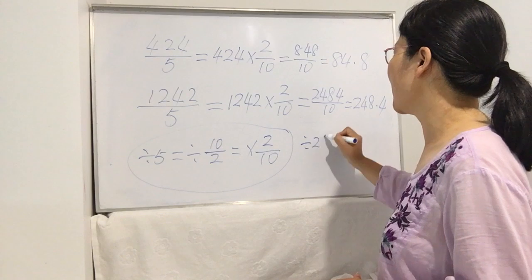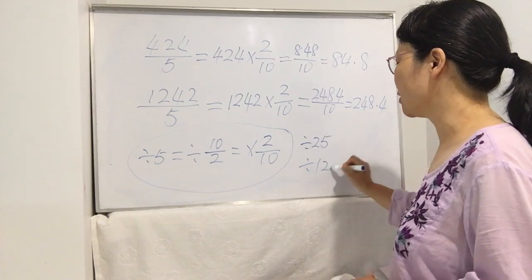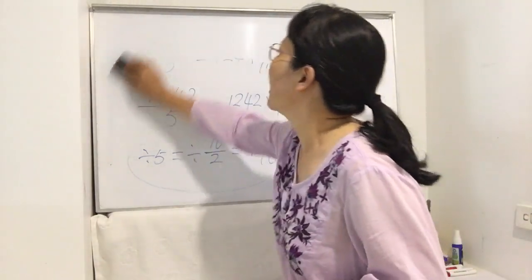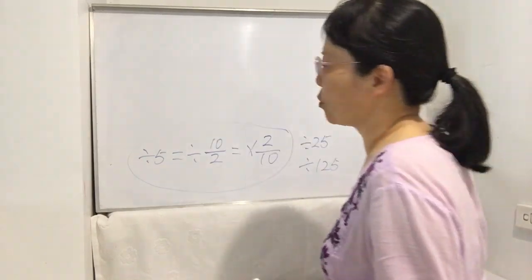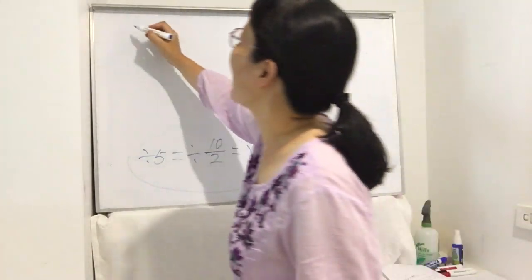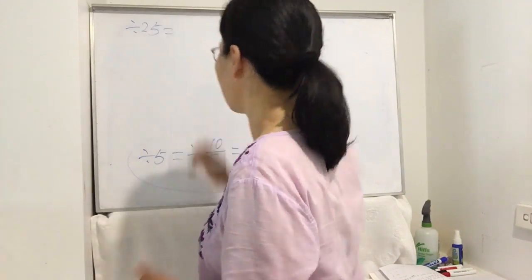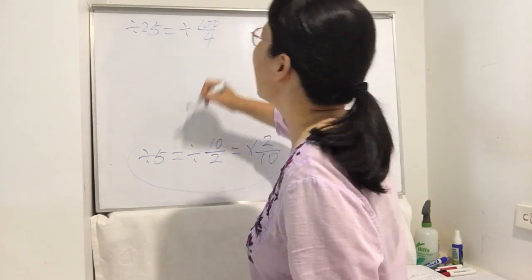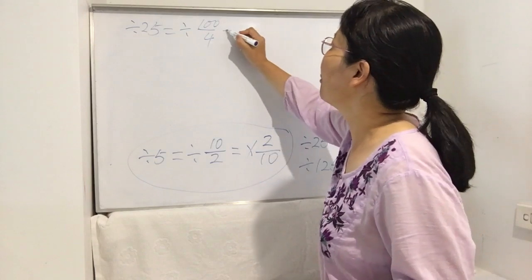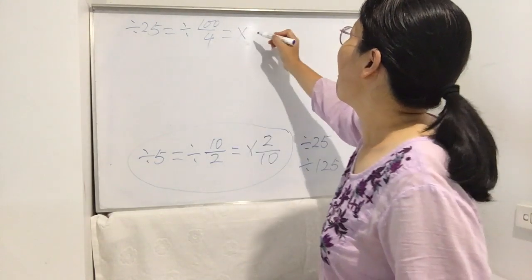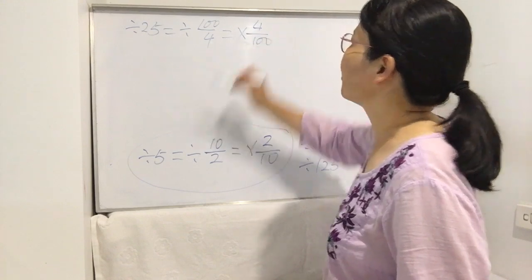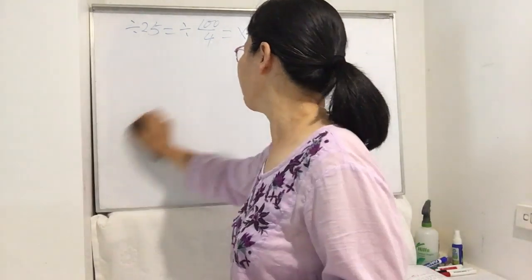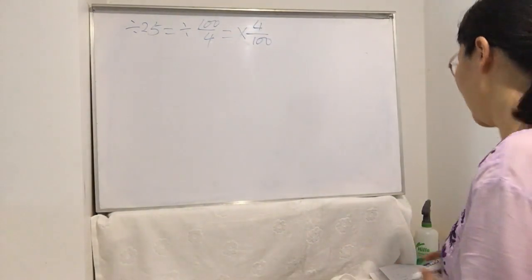Now let's see how to do divided by 25 and divided by 125. If you divide by 25, you can use the same type of thinking. Actually, 25 is equal to 100 divided by 4. So divided by 25 means times 4 divided by 100. If you use this special technique, let's look at some examples and you will see it works out very fast.